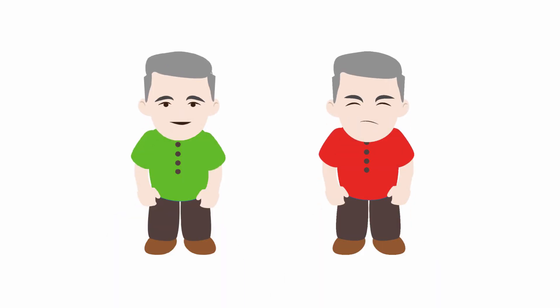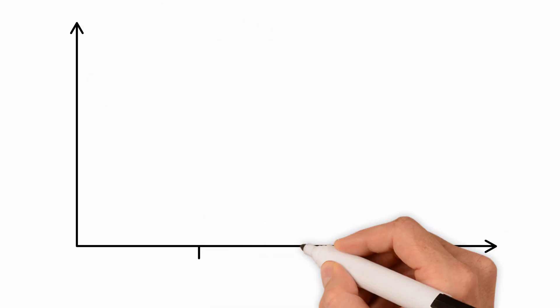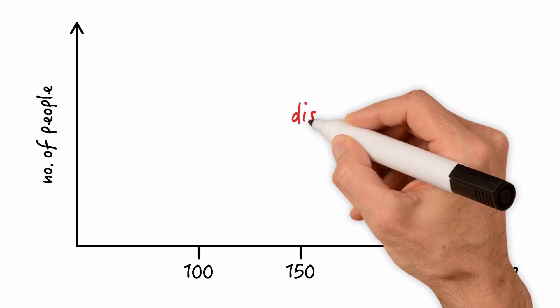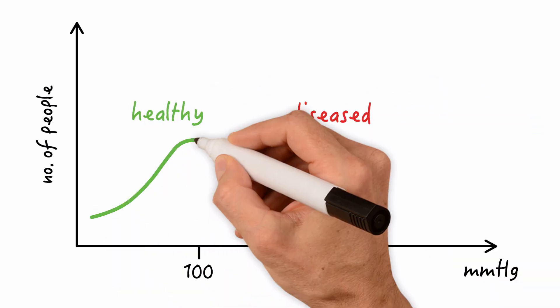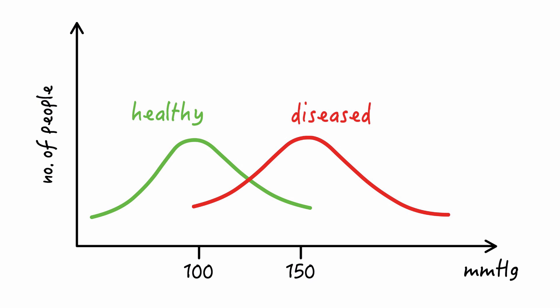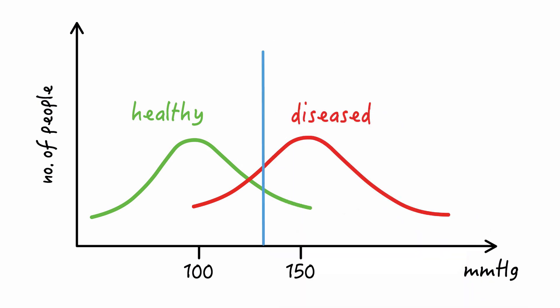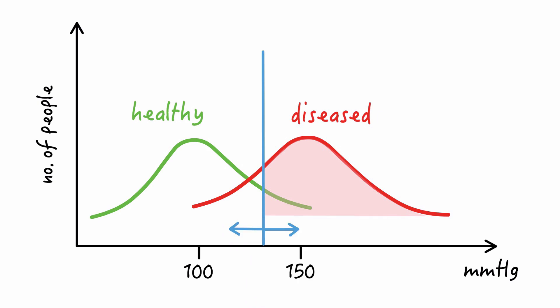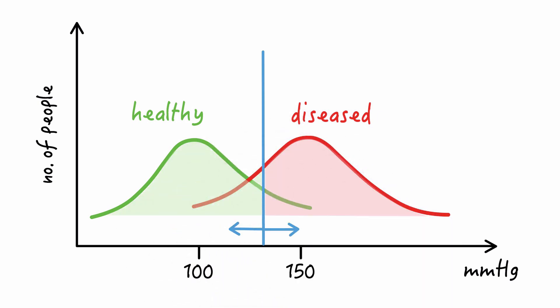In clinical medicine and in public health, we need tests in order to separate healthy from diseased individuals. Most of the time these tests assess a continuous variable like blood pressure, which is measured in millimeters of mercury, for example. Diseased and healthy individuals usually have different distributions of that variable. So we choose a threshold above which individuals are classified as diseased, and below which they're classified as healthy or non-diseased.